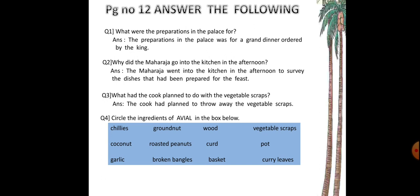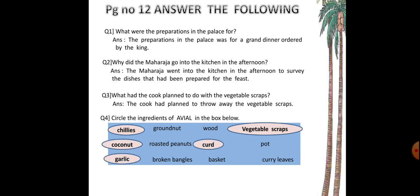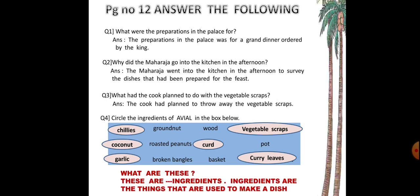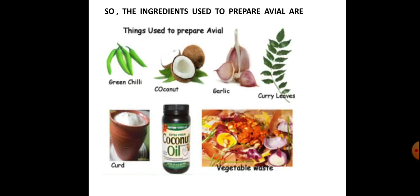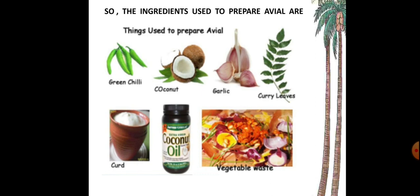We have to circle the ingredients which are used in the avial. The answer: chillies, vegetable scraps, coconut, curd, garlic, and curry leaves. Ingredients are the things that are used to make any dish. The things used to prepare avial are green chillies, coconut, garlic, curry leaves, curd, coconut oil, and vegetable waste.